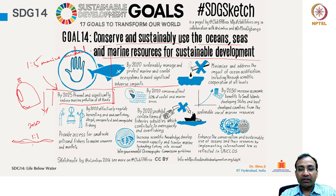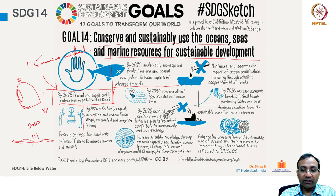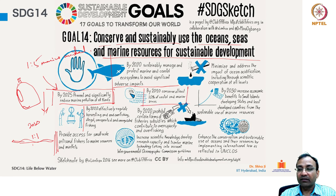By 2020, effectively regulate harvesting and end overfishing, illegal, unreported and unregulated fishing, and provide access for small-scale artisanal fishers to marine resources and markets. By 2020, conserve at least 10% of coastal and marine areas. By 2020, prohibit certain forms of fisheries subsidies which contribute to over-capacity and overfishing.